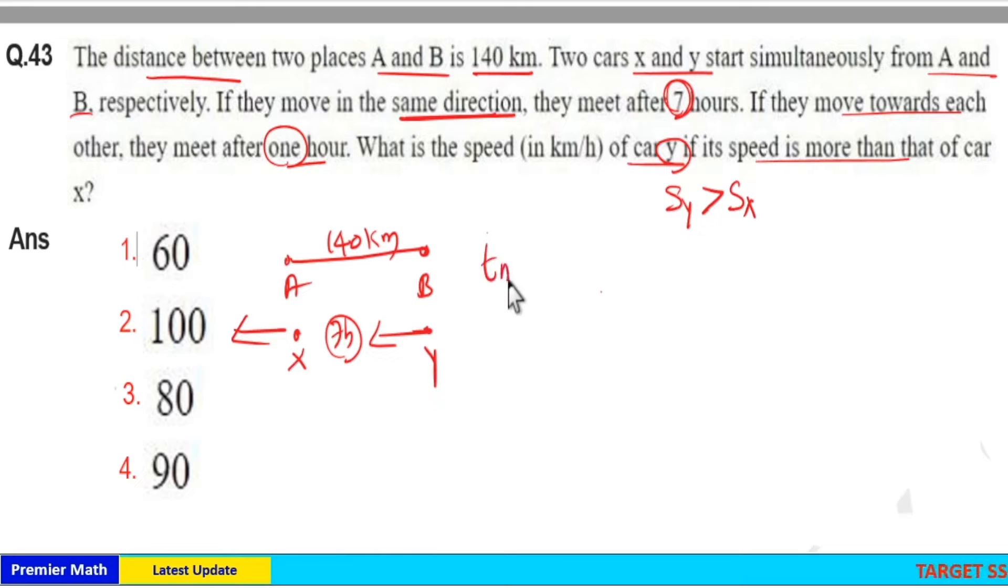Time of meet equals distance between them divided by relative speed of X and Y. The distance is 140 km. Since car Y's speed is greater, the relative speed is Y minus X.